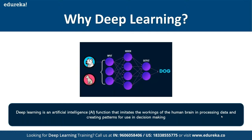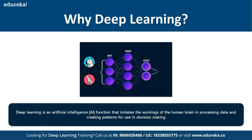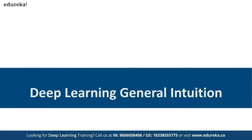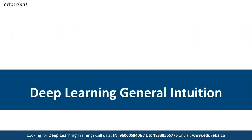Deep learning is an artificial intelligence function that imitates the working of the human brain in processing data and creating patterns for use in decision making. That's what deep learning means.